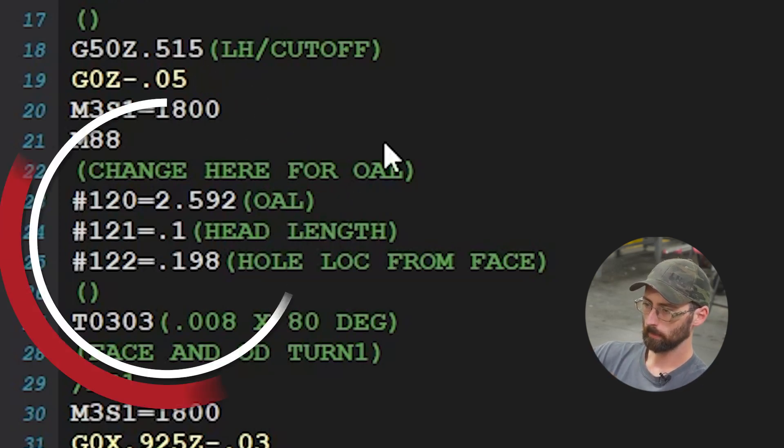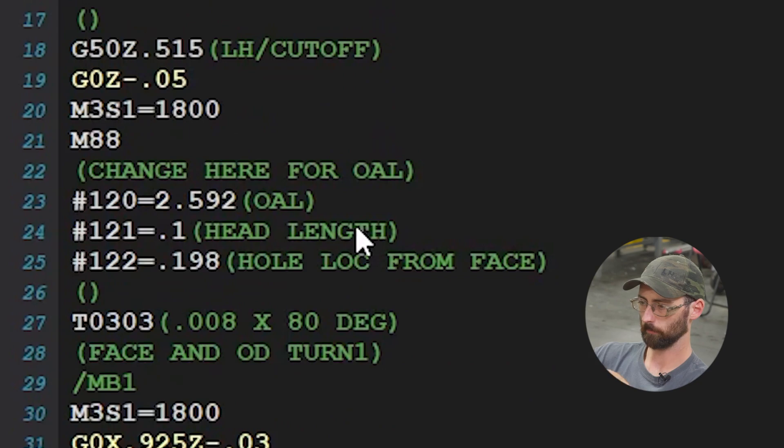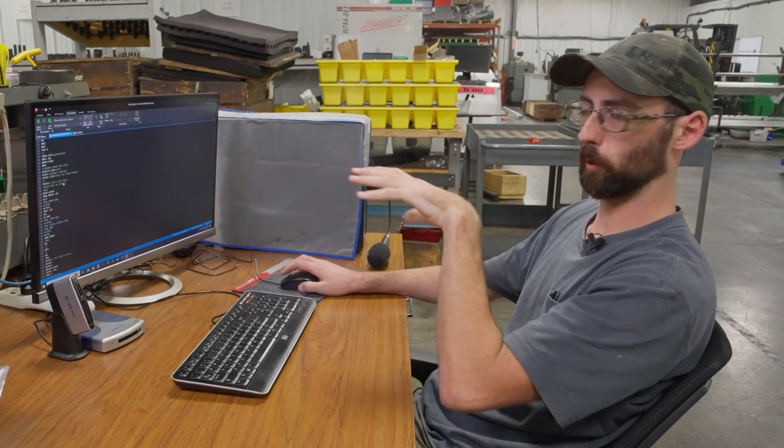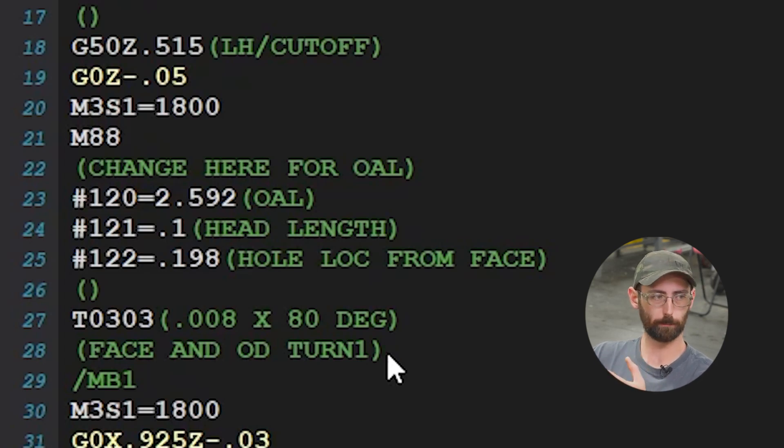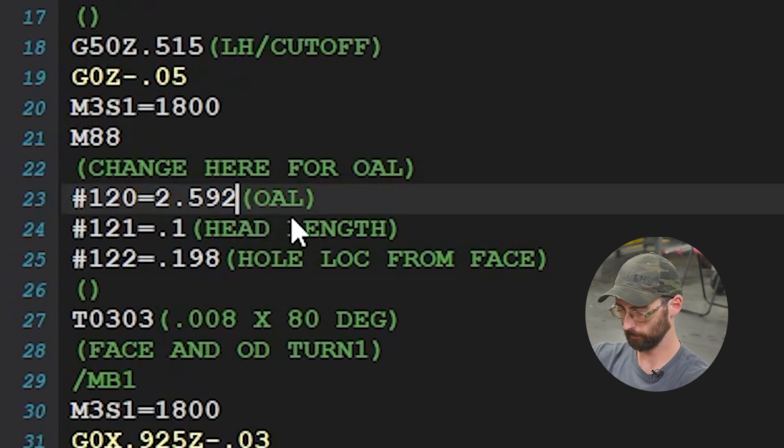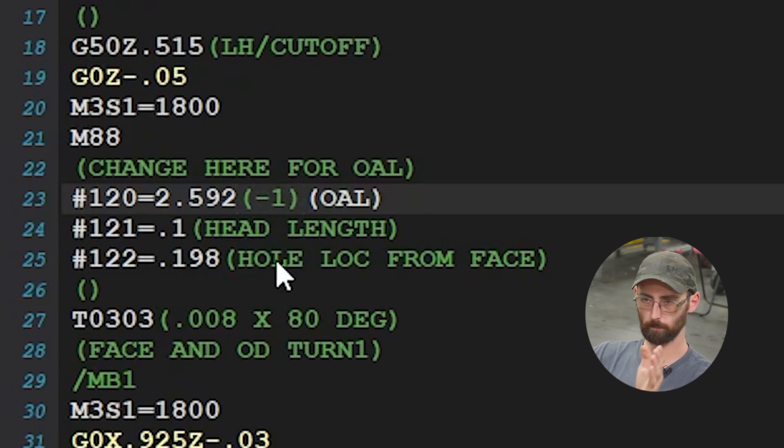This example program is an altered version of a part we actually run. It's a family of parts, a pin. There's like eight of them, all different lengths. The only thing different is the length. So all we have to do to go from part number XYZ-1 to XYZ-2 is change this length variable.